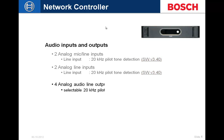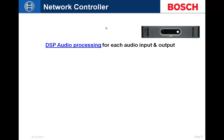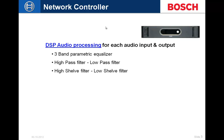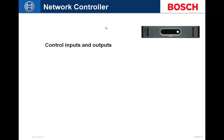For audio inputs and outputs, we have four audio ins and four audio outs. The first two inputs are switchable between mic and line input. The second two inputs are line input only. The outputs offer four channels, and pilot tone can be enabled for all four. DSP audio processing is available on every input and output, including three parametric filters, high-pass, low-pass, shelf filters, and input sensitivity and output gain adjustments.